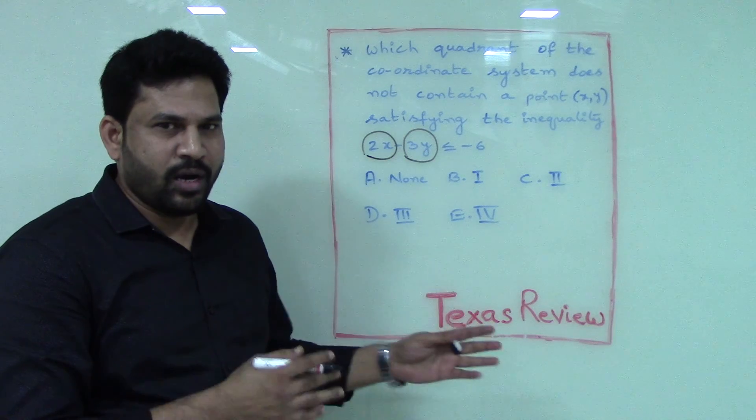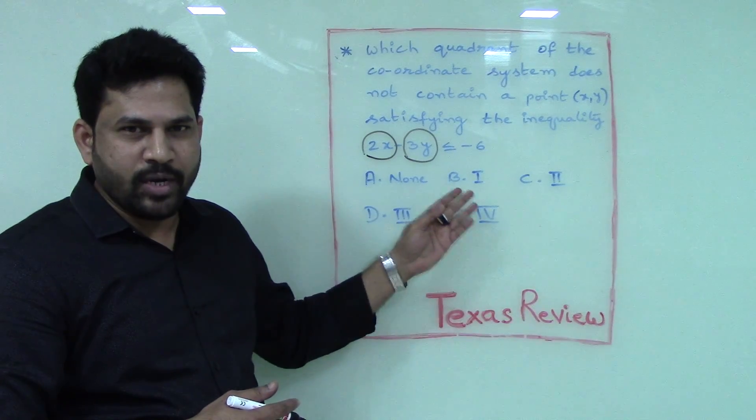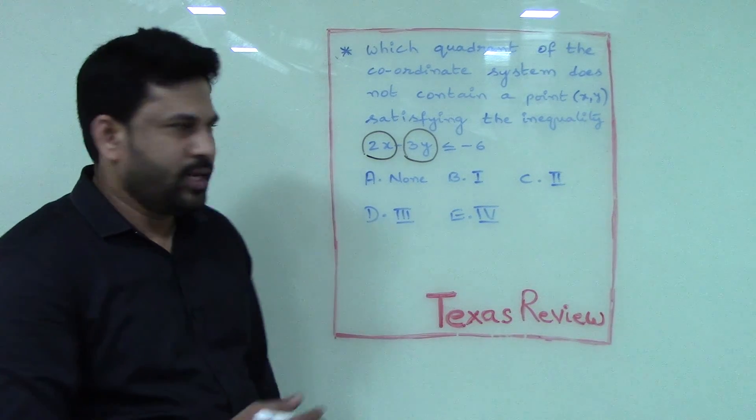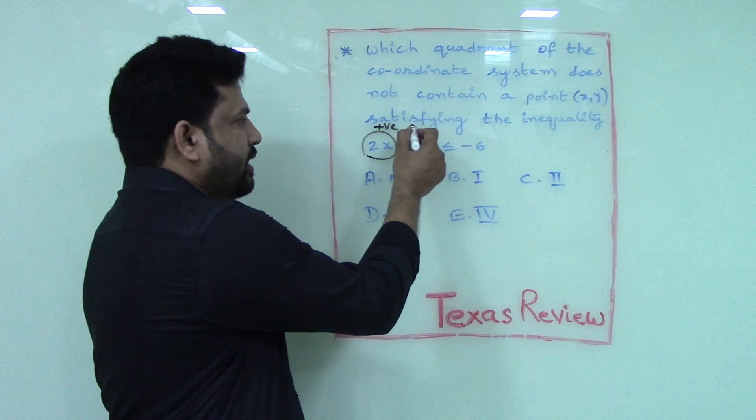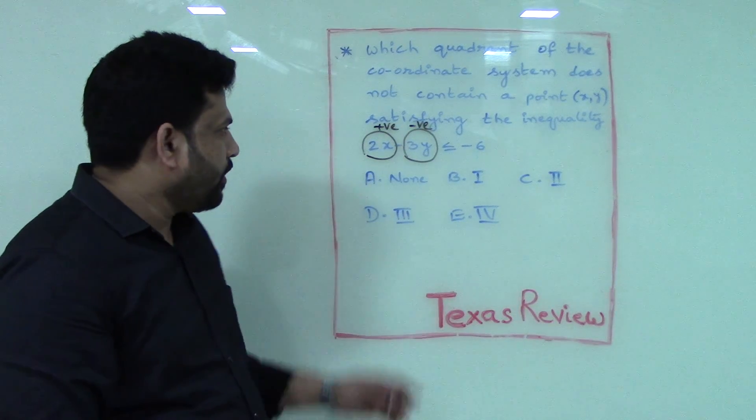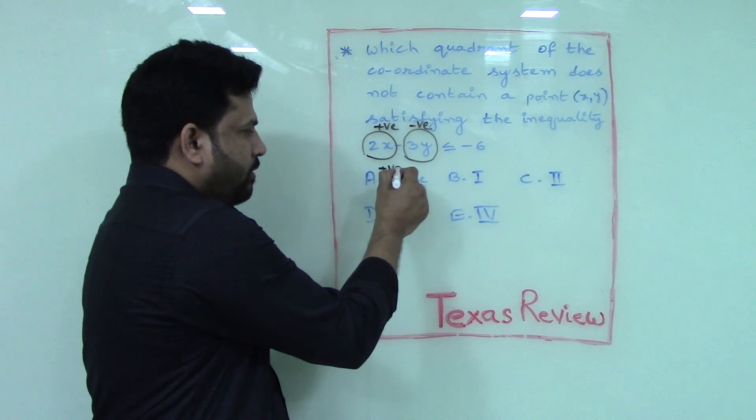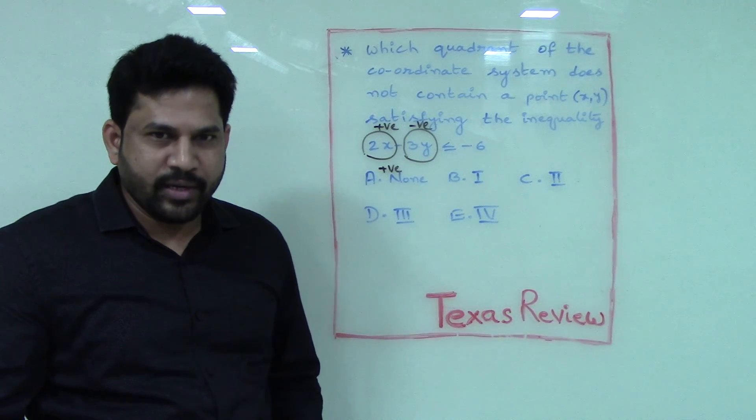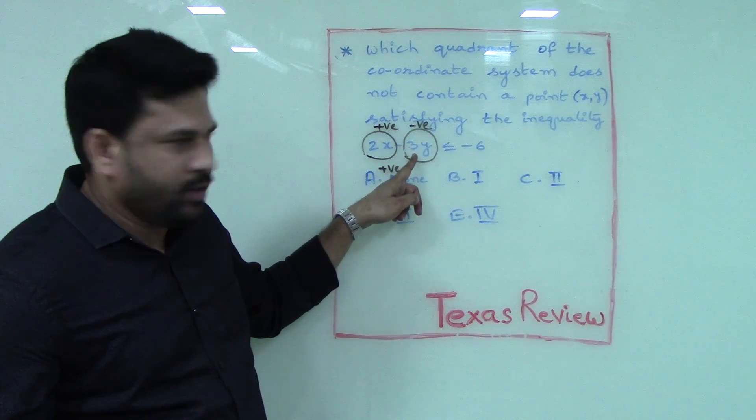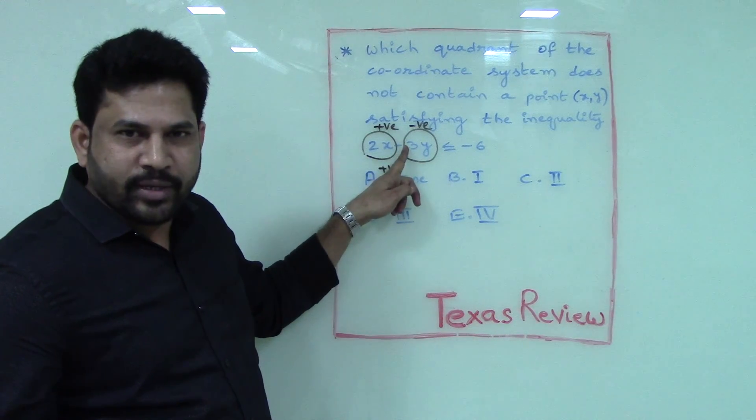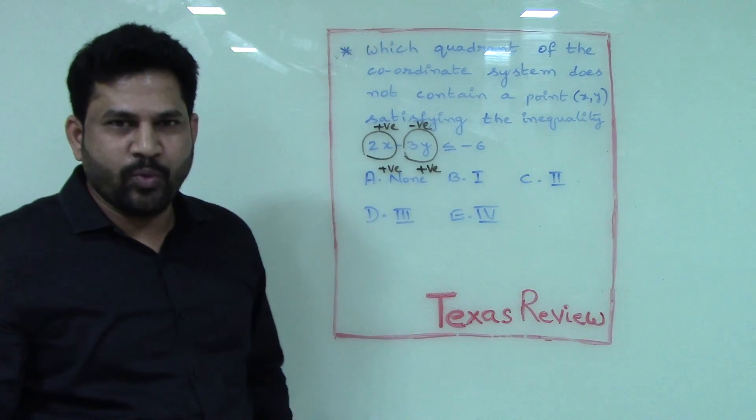For the quadrant to not contain a point, it should not satisfy this inequality. When this inequality is not satisfied, in case x is positive and y is negative, let us see what happens. If x is positive, the expression 2x becomes positive. And in case y is negative, because there is a negative already before 3y, negative into negative becomes positive. So this entire expression becomes positive.